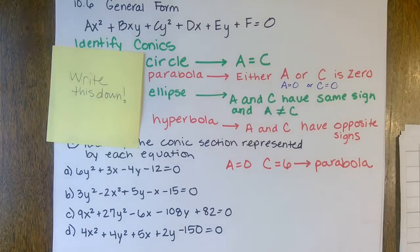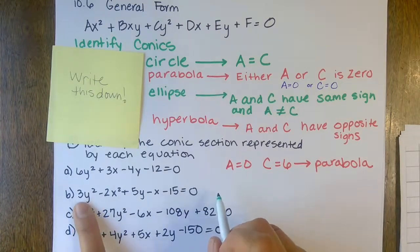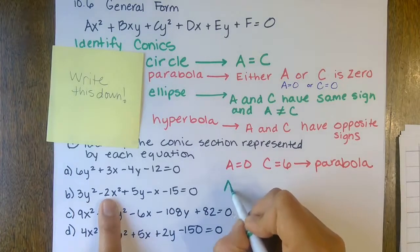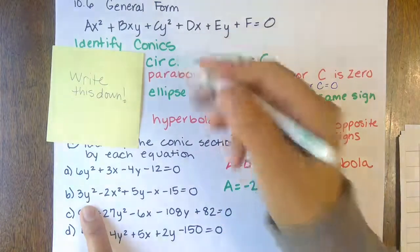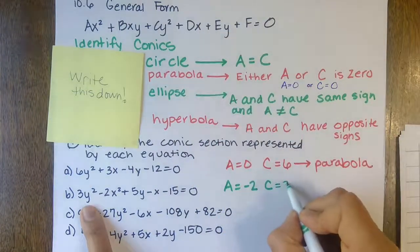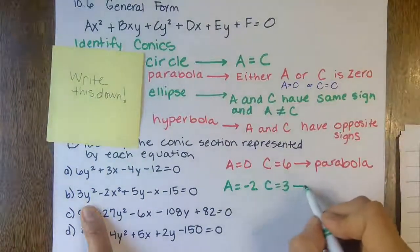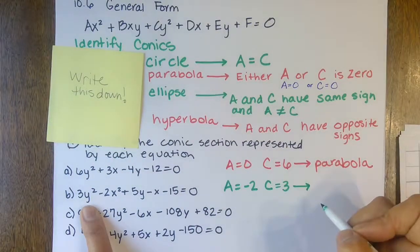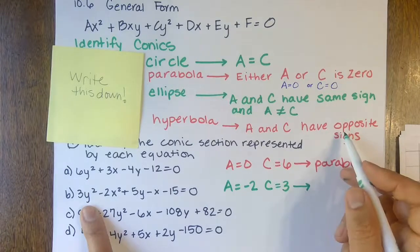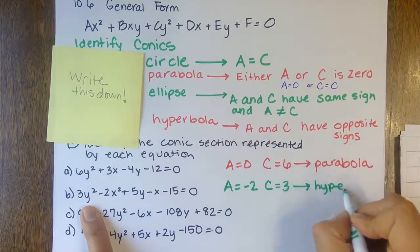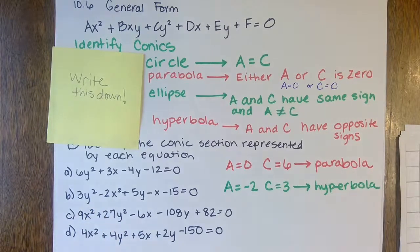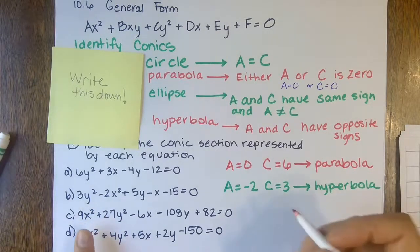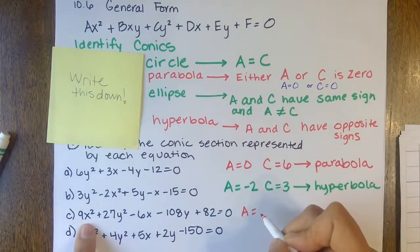Problem B: your A value is the x² term coefficient, so A is negative two. Your C value is the y² term, so C is three. Looking at the rules — opposite signs — it's a hyperbola.